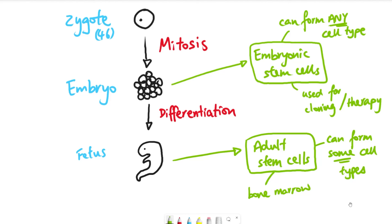Those are the two types of stem cells you need to be aware of for animals. In exam questions, they often provide a paragraph or table with information about different types of stem cells and how they might be used. A typical question asks you to evaluate the use of stem cells for a specific purpose, requiring you to use the provided information and your own understanding to explain what's good and what's bad about using that type of stem cell.